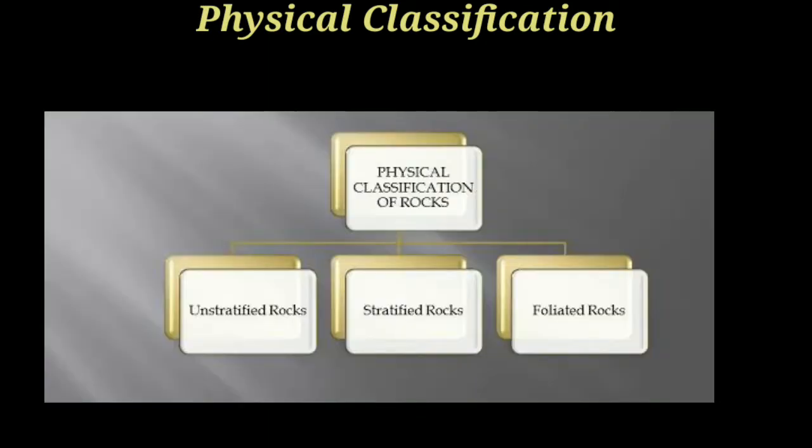Rocks are classified physically into three types: first is stratified rocks, second is unstratified rocks, and third is foliated rocks.